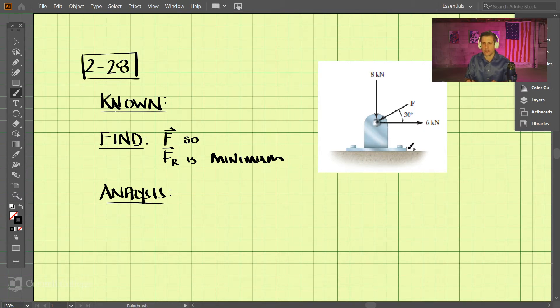So let's just add together the 8 kilonewtons and 6 kilonewtons first. We have 6 kilonewtons to the right and 8 kilonewtons down.